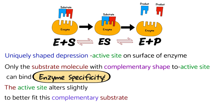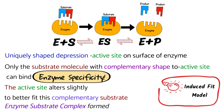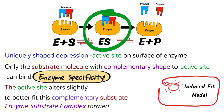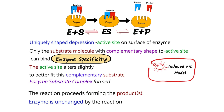When the substrate fits into the active site of the enzyme, the active site alters slightly to better fit around that complementary substrate. This is known as the induced fit model. When this takes place, the enzyme-substrate complex is formed. Ideal conditions now exist, the reaction takes place, and you're left with your product or products and the enzyme unchanged by the reaction.